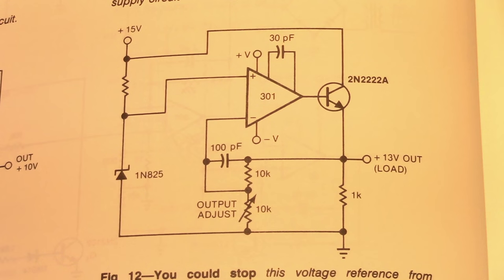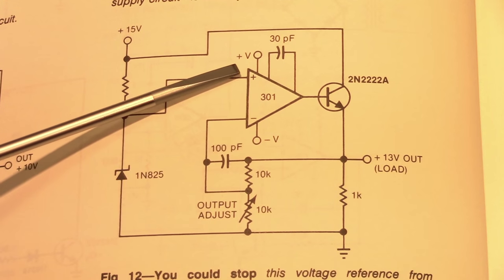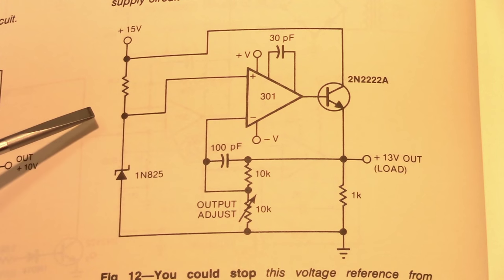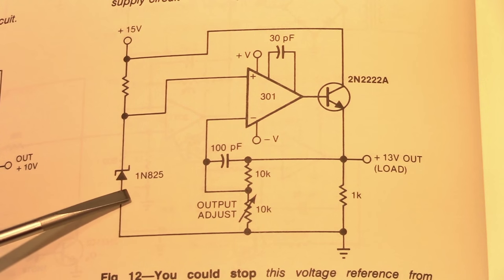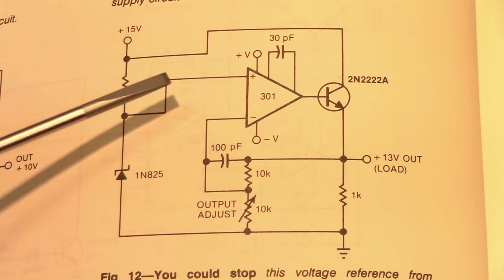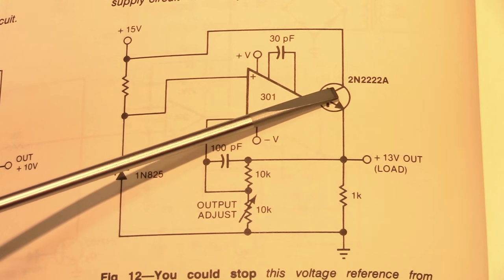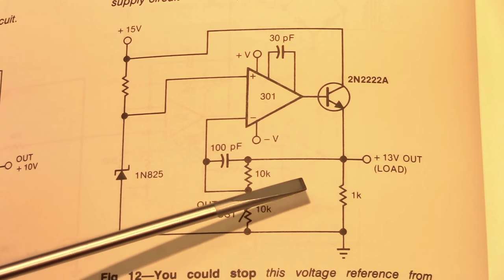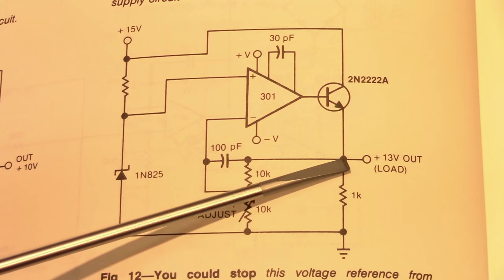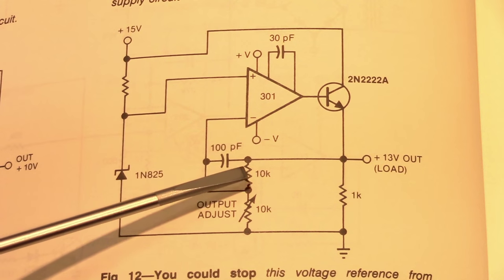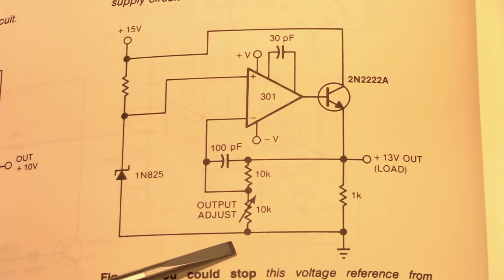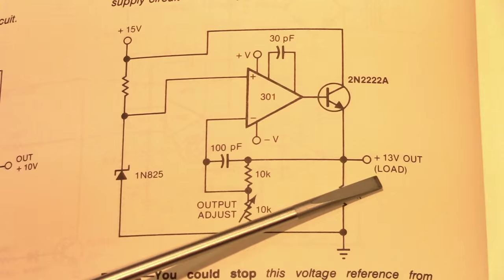If we look at this schematic in figure 12, we can see that we just have a non-inverting amplifier whose input is being driven from this 6.2V Zener diode. Its output drives an emitter follower here, and the feedback for the op-amp is actually taken from the emitter. These are your two feedback resistors, obviously one of them is adjustable so you can tweak the output here.